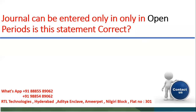Welcome to RTL Online Trainings. In this session, we are going to discuss an important question in Oracle Fusion Financials. In the General Ledger module, we create journals manually or import them from different modules like Accounts Payable, Accounts Receivable, or legacy systems. The question is: we can enter journals only in open periods — we cannot enter journals if the period status is not open. But is there any other period status that will allow you to enter journals?